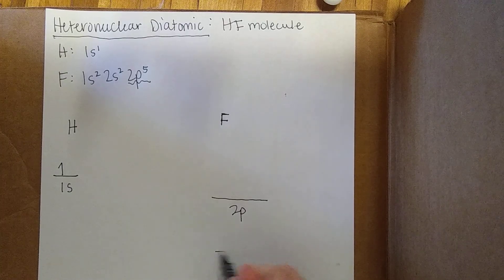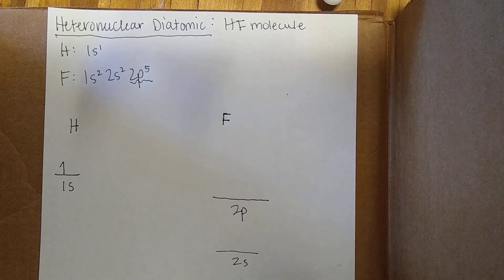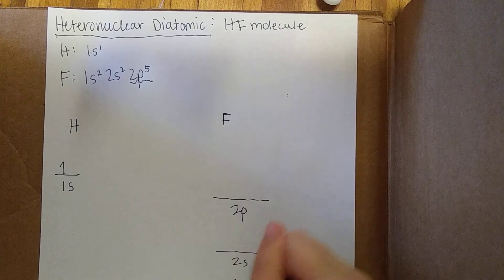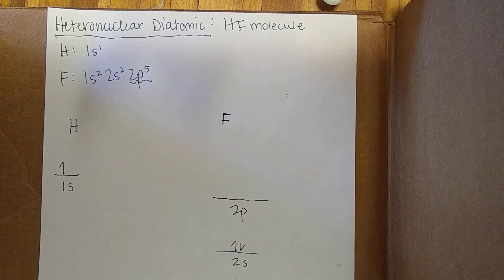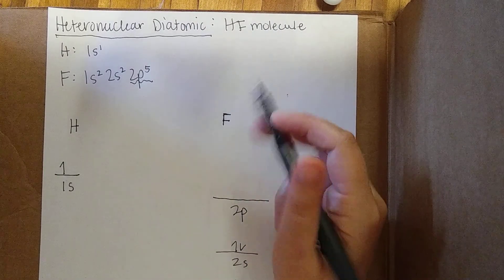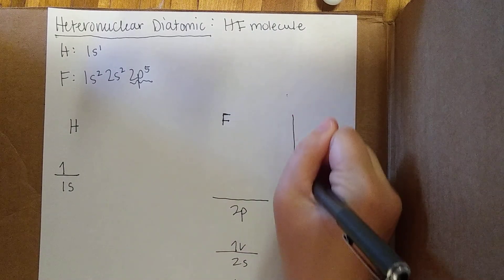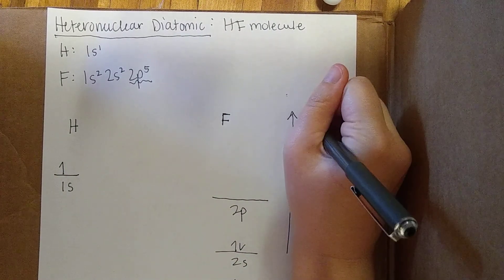So technically, this fluorine also has a 2s and a 1s level, but they're already filled. They're not going to participate in bonding. They're considered part of the core, in a sense. So once again, we're drawing this as lower in energy.